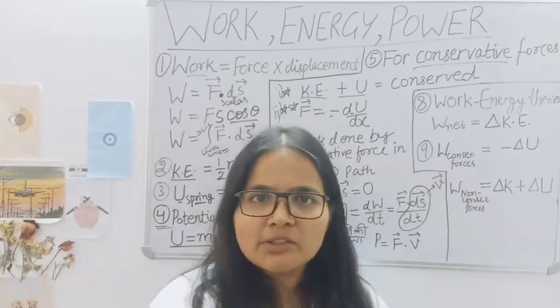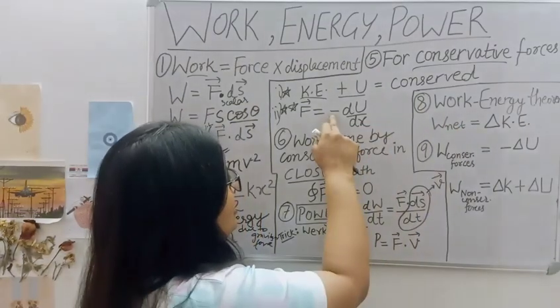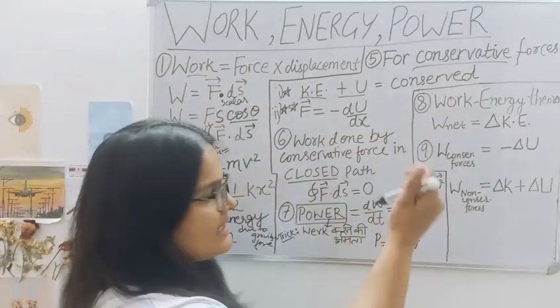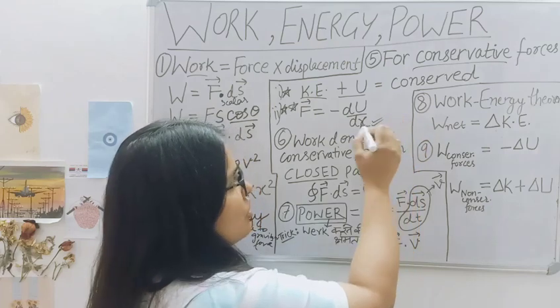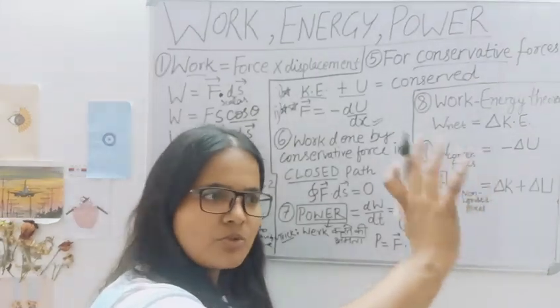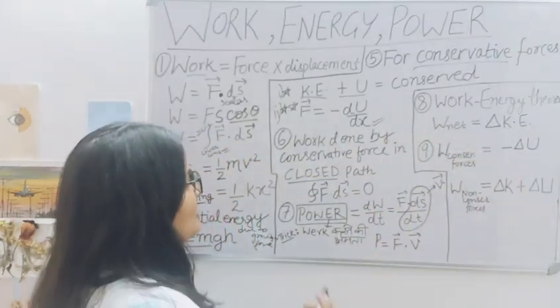So when you use it, you can apply it. F vector is equal to minus dU by dx. When you change it in x, you use it to easily eliminate the answer.